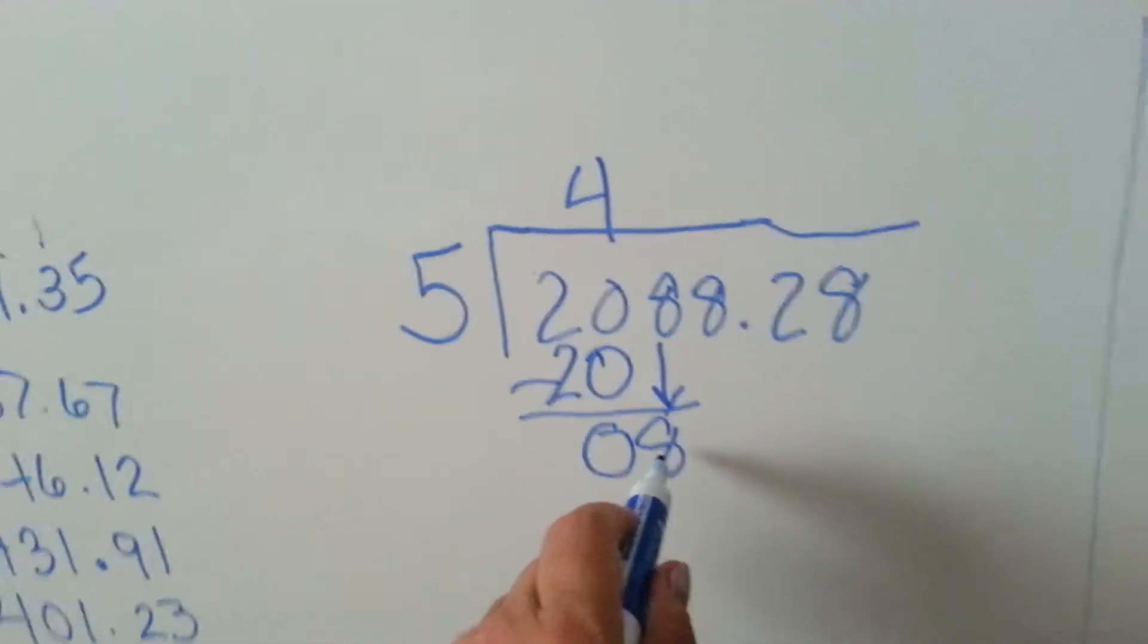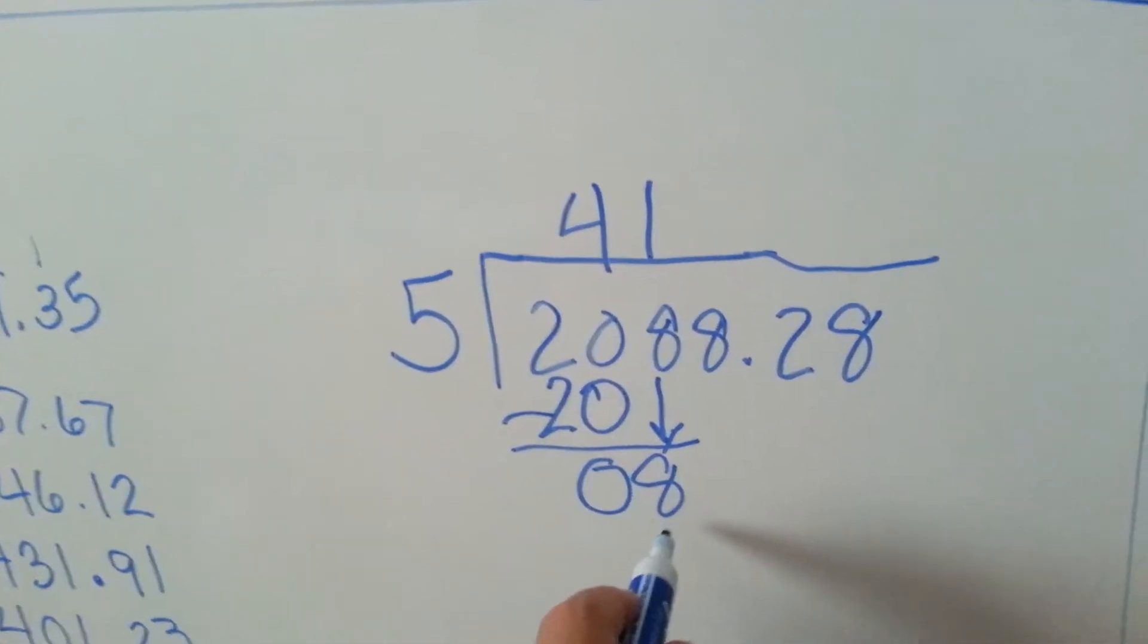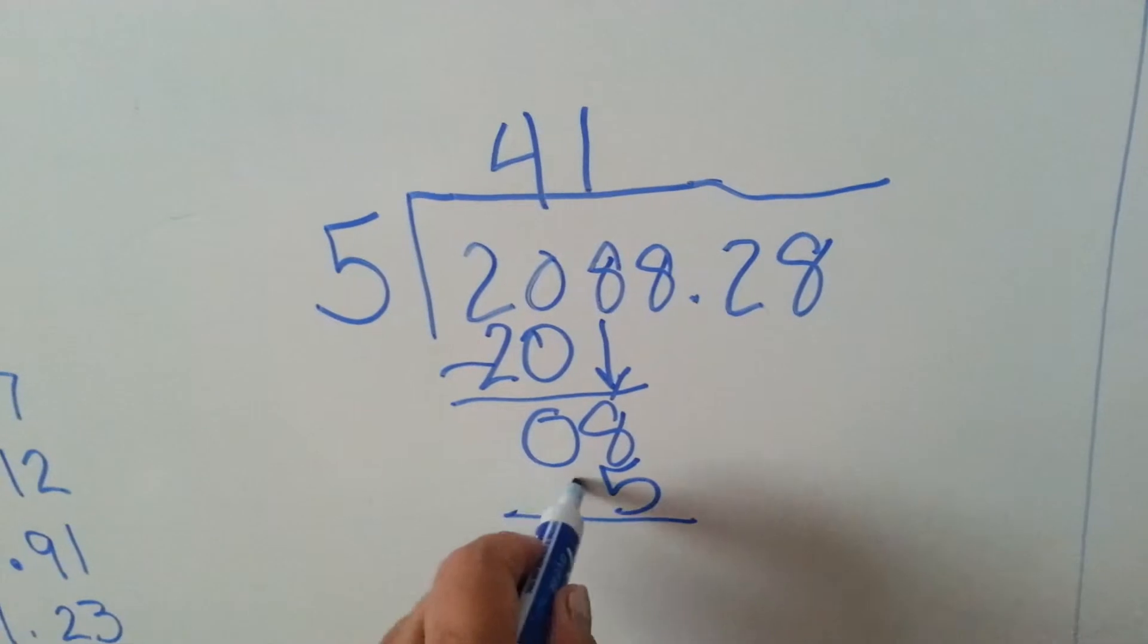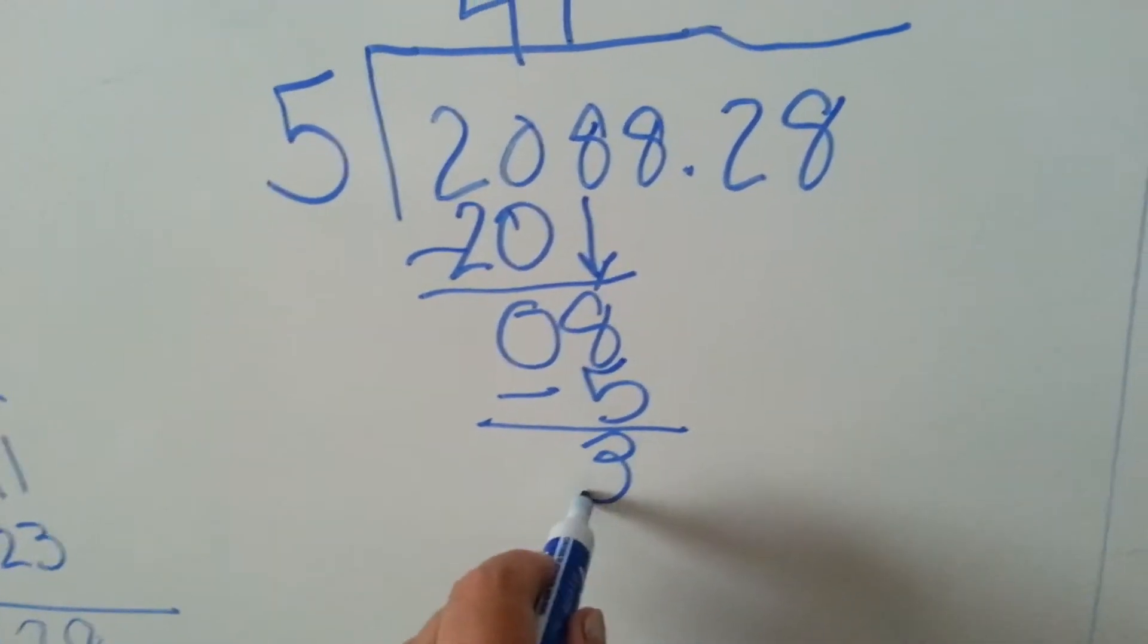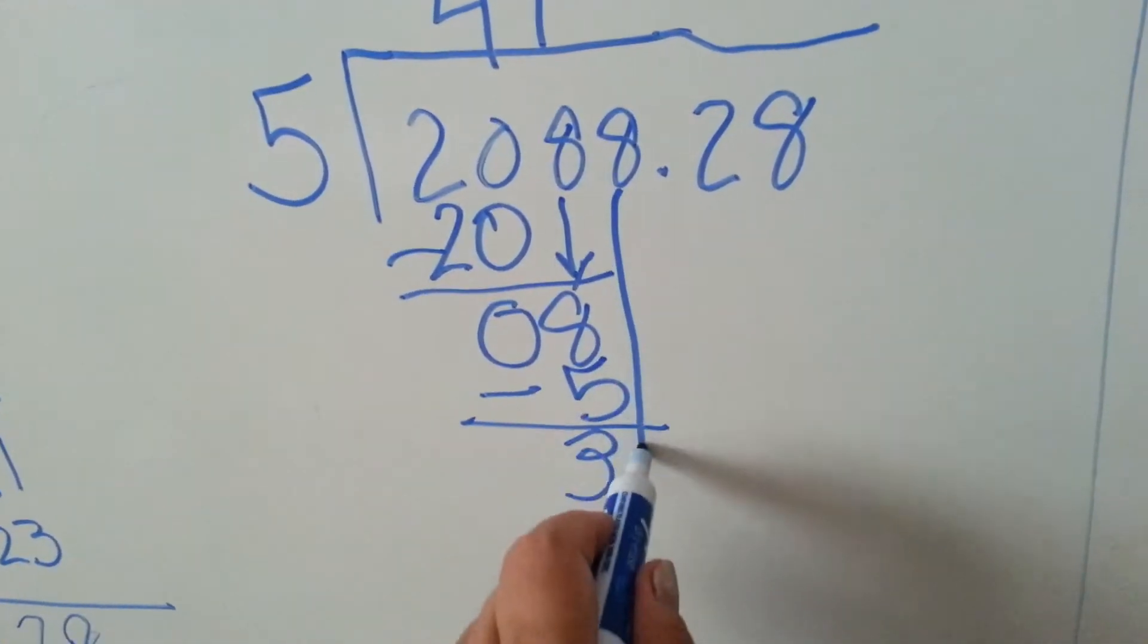Can 5 go into 8? Yes, one time. So we put it above that 8. 5 times 1 is 5. We do our subtraction, and we get 3. Can 5 go into 3? No. So it's this 8's turn to come down.